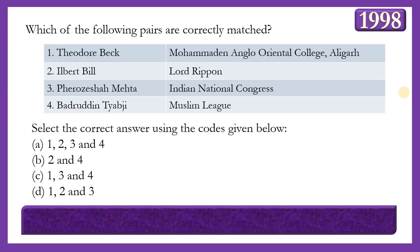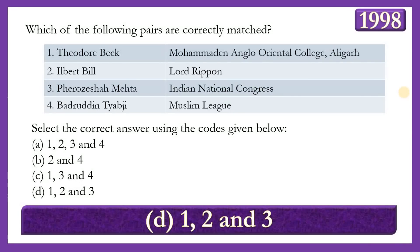Next question: Which of the following pairs is correctly matched? (1) Theodore Beck — Muhammadan Anglo-Oriental College, Aligarh; (2) Ilbert Bill — Lord Ripon; (3) Pherozeshah Mehta — Indian National Congress; (4) Badruddin Tyabji — Muslim League. The answer includes pairs 1, 2, and 3, as Theodore Beck was the first principal of Muhammadan Anglo-Oriental College; Lord Ripon passed the Ilbert Bill in 1883; Pherozeshah Mehta was a founding member of the INC; and Badruddin Tyabji was actually the first Muslim president of the INC in 1887, not related to the Muslim League.